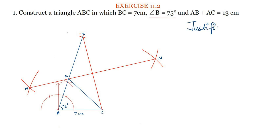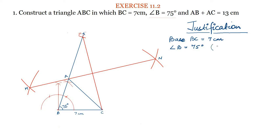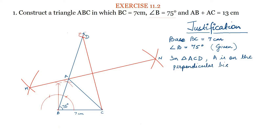Now let us see the justification and see how we have obtained the required triangle ABC. Here, BC is equal to 7 cm and angle B is equal to 75 degrees — this is given to us. We need to prove that AB plus AC is equal to 13 cm. In triangle ACD, A is the point on the perpendicular bisector MN of CD.